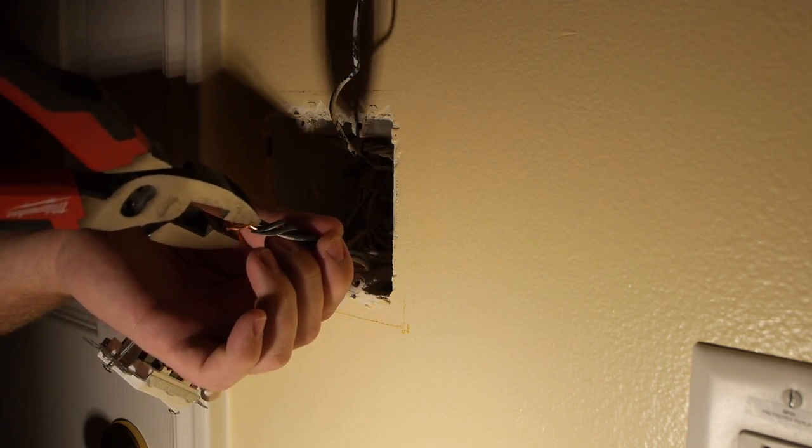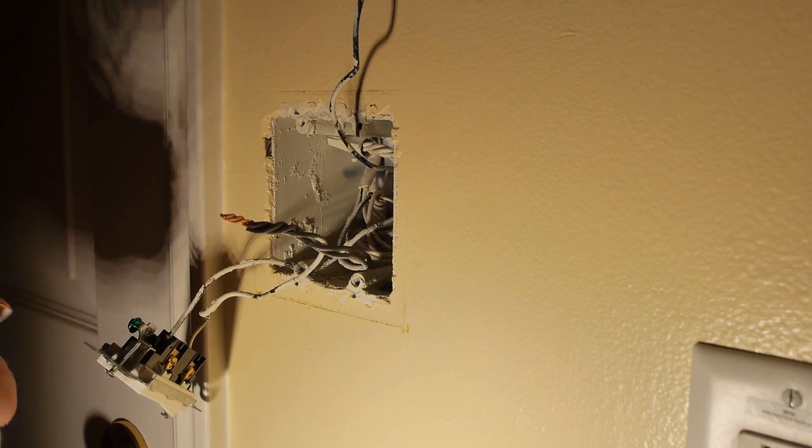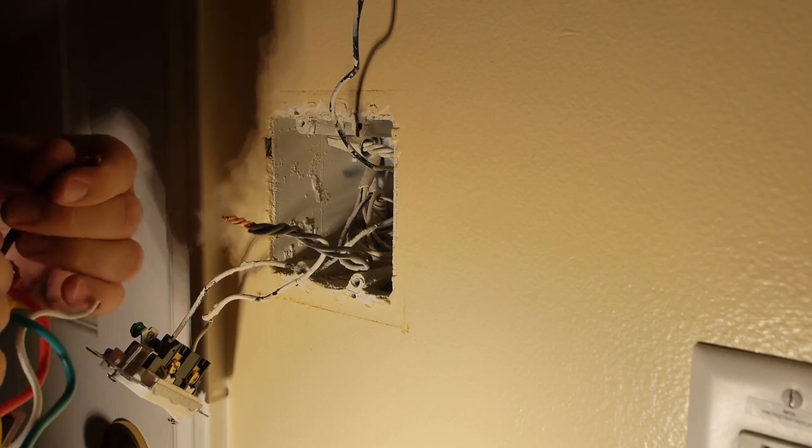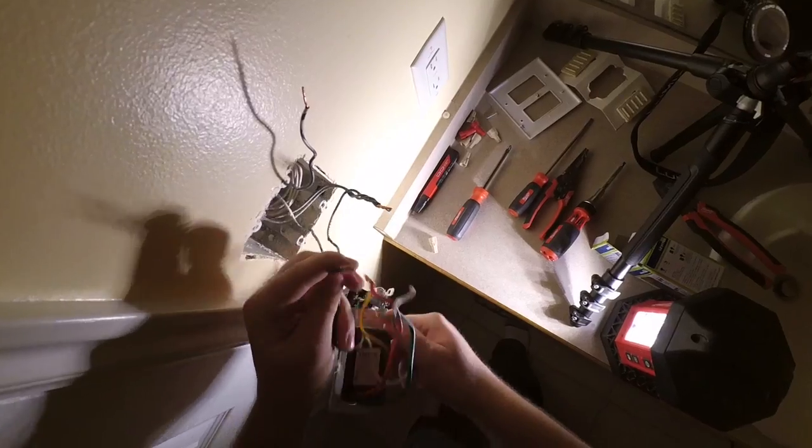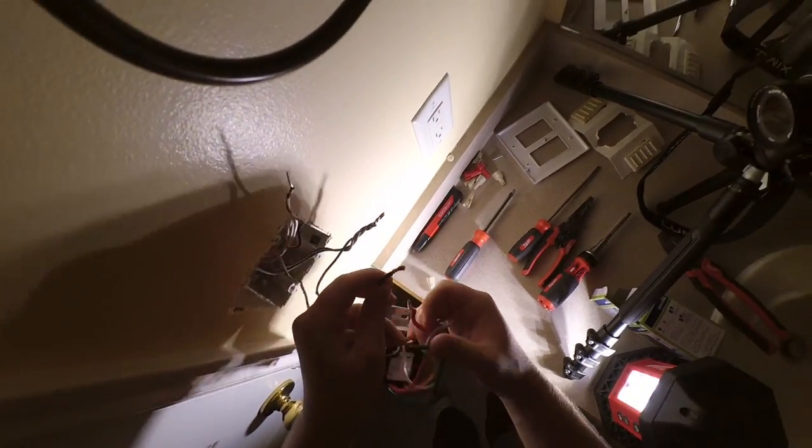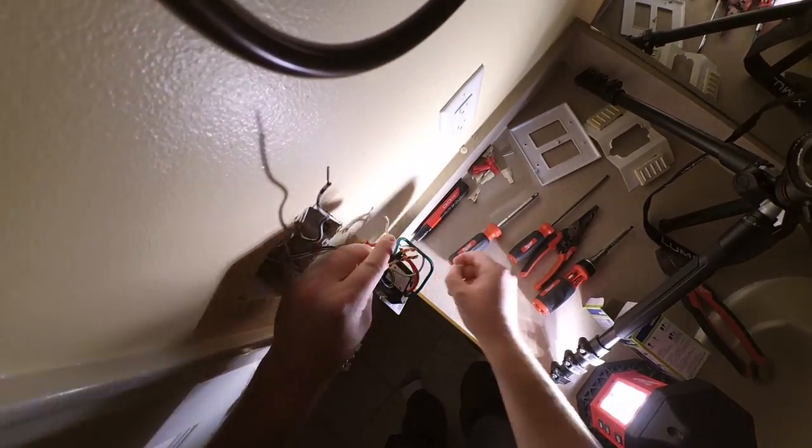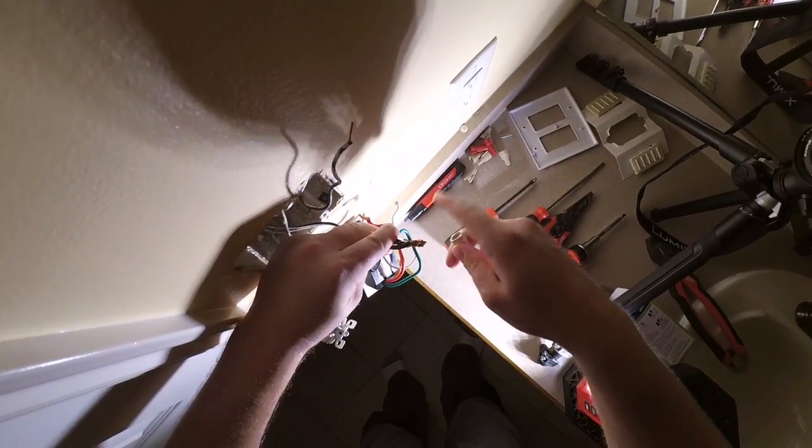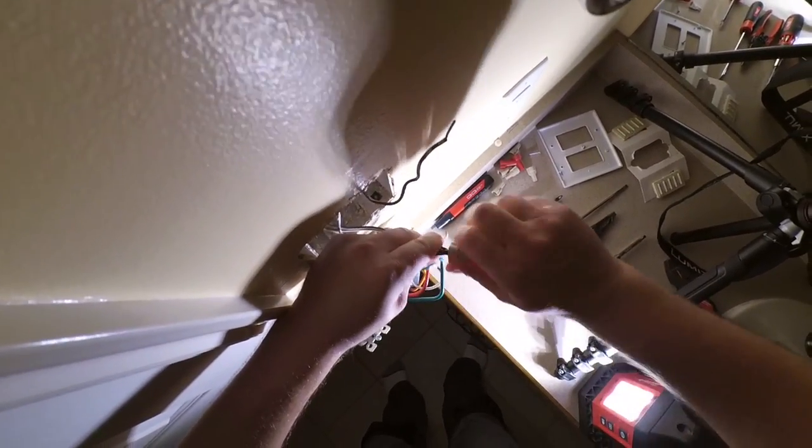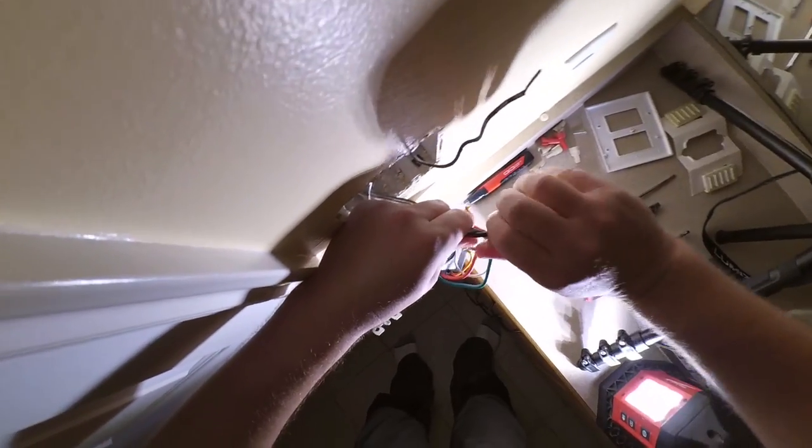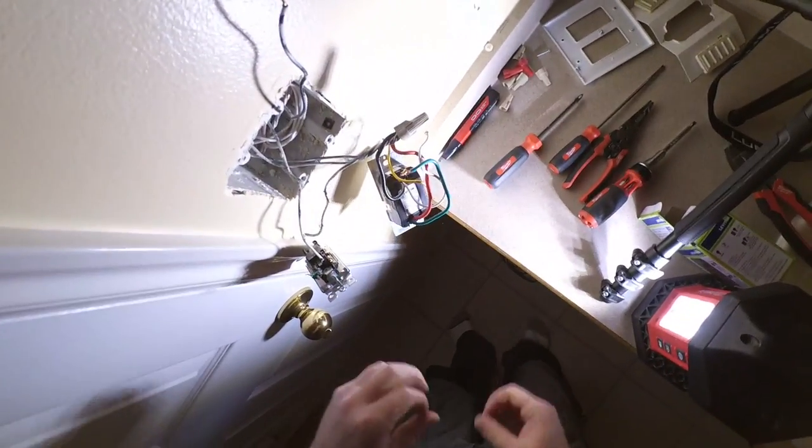And then the timer, straighten this guy out. The black wire is going to get wire nutted to the power, the power coming into the box. So wire nut that together. That's your first connection. Give a little tug on that and make sure it's not going to come out.